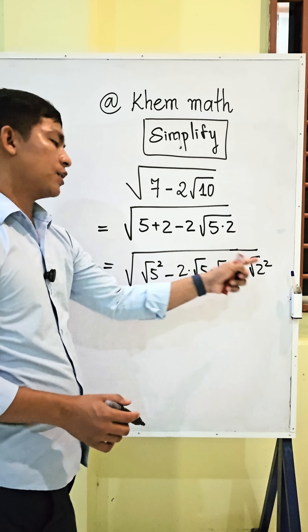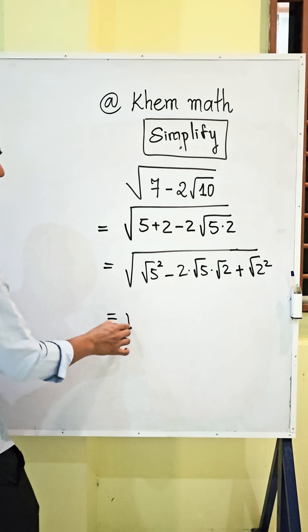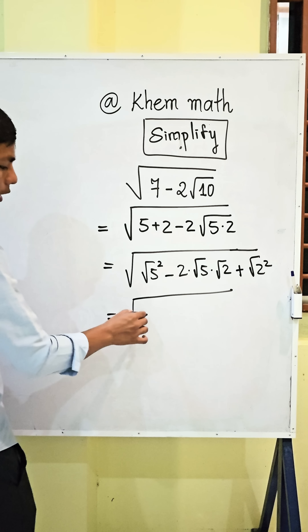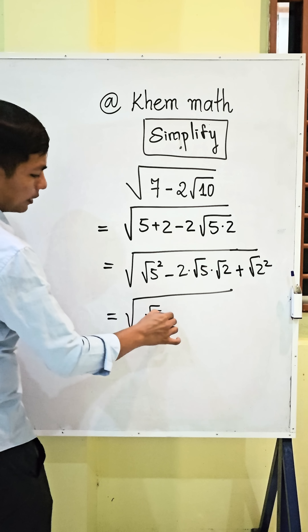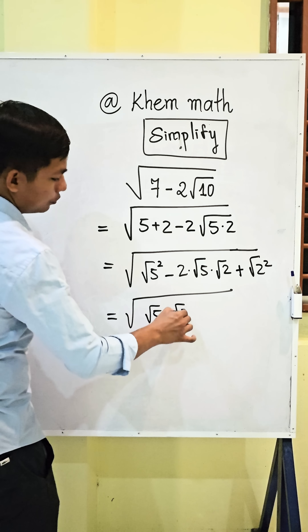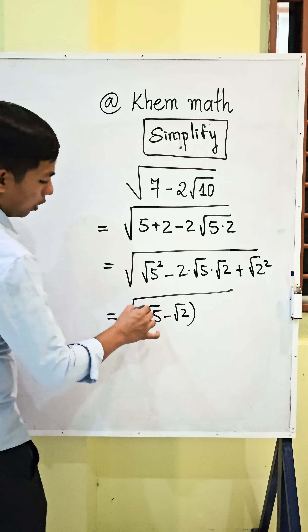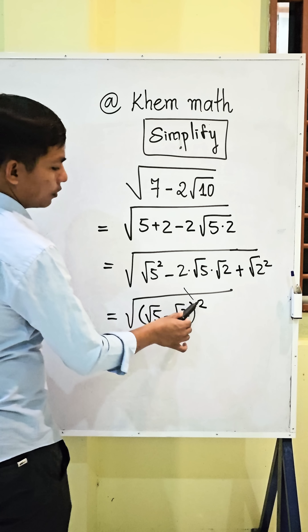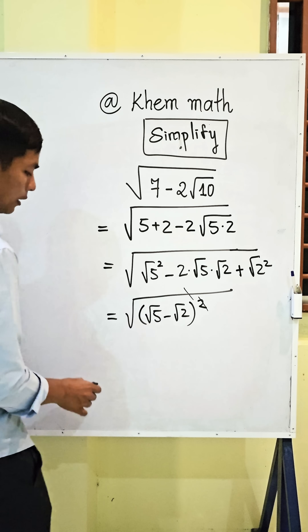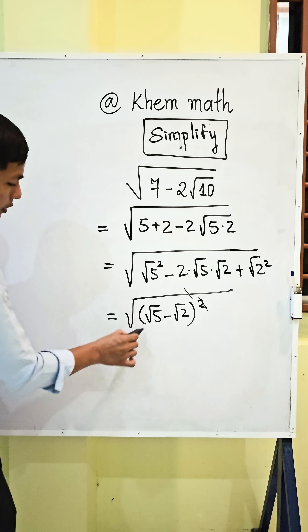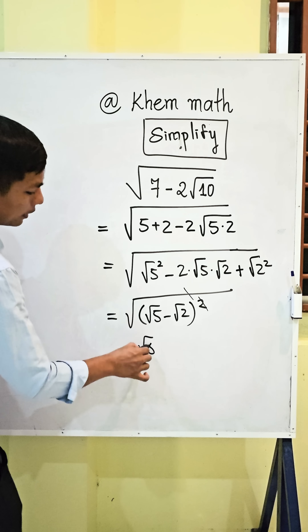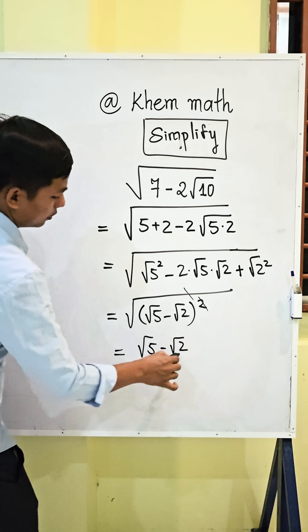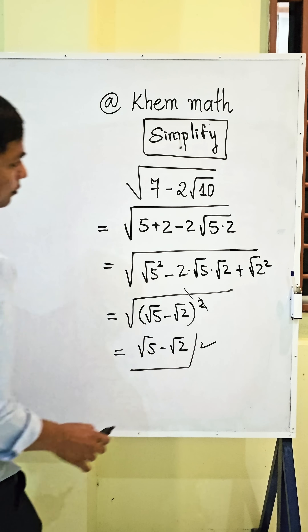So we get the square root of (√5 minus √2)². Simplifying the square root with the square, our final answer is √5 minus √2.